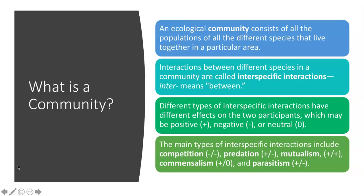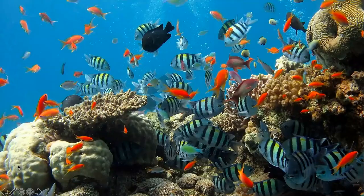When we look at the interactions between different species in a community, we call those interspecific interactions, because 'inter' means between. These interactions have different effects on the two participants. They can be positive, denoted with a plus sign; negative, denoted with a minus sign; or neutral, denoted with a zero. The main types we'll look at today are: competition (negative-negative), predation (positive-negative), mutualism (positive-positive), commensalism (positive-zero), and parasitism (positive-negative).